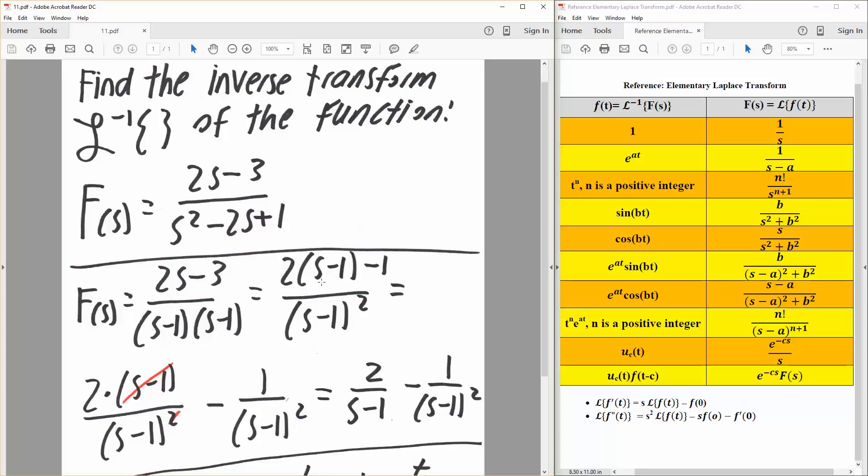The next thing we're going to do is separate everything out. If we say 2 times s minus 1 divided by s minus 1 squared minus 1 divided by s minus 1 squared, that's equivalent, right?